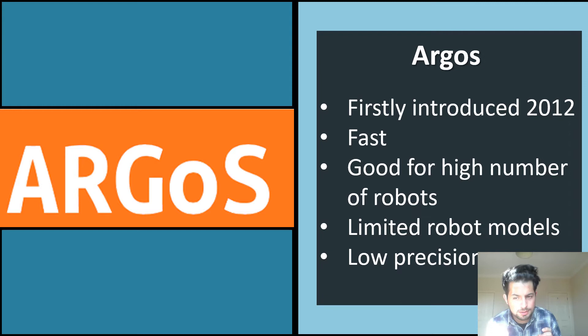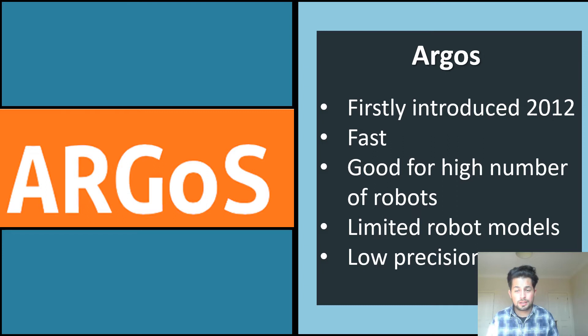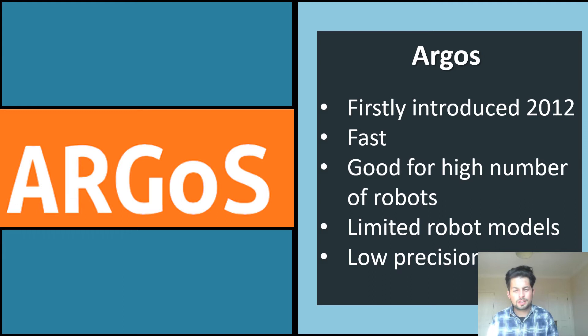The main drawback of Argos is its low precision and accuracy — the representation of the environment and robots is not very accurate. The good thing is that this is why it's quick and you can run many simulations. But when you try to put your algorithms into hardware, the performance might be different. One last thing: the documentation is way better than Player/Stage — not perfect, but you can use it fairly easily.